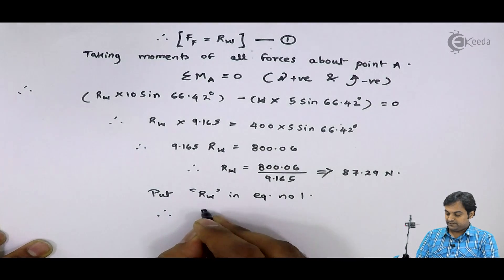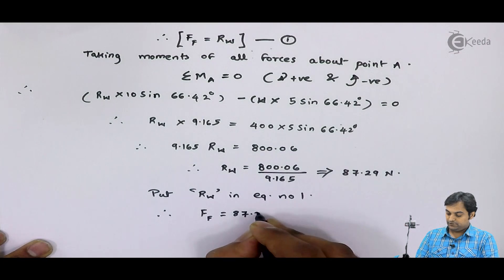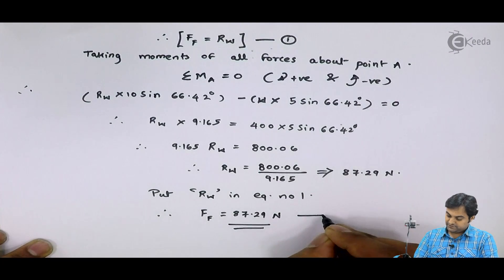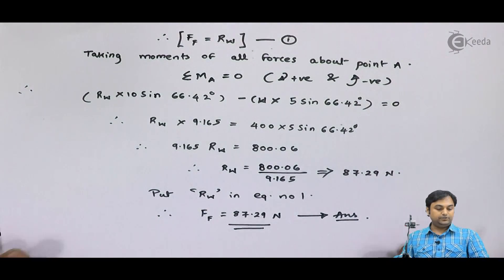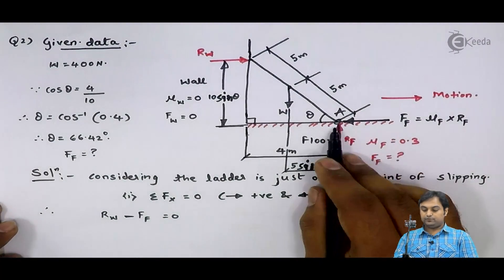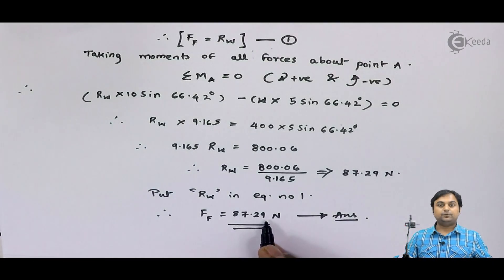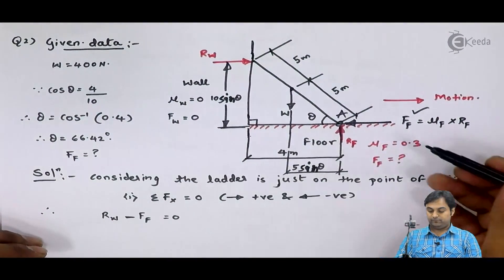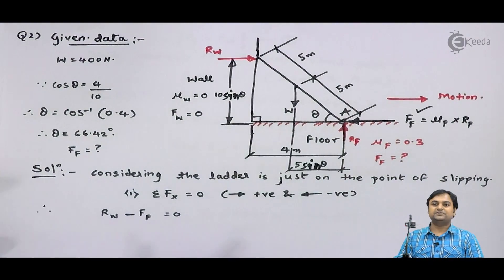Substituting this value into equation number one, the frictional force offered by the floor is F_F = 87.29 Newton. The question asked us to find the friction force at the floor, and that answer is 87.29 Newton — the force that keeps the ladder in contact with the floor and wall. With this we complete the question.